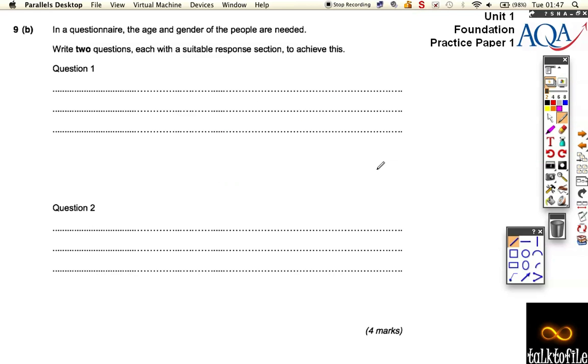If you look at this next one, so this is now focusing on questionnaires and it's asking us to write two questions. In the questionnaire, we want to find something about the age and something about the gender of the people. Now, you can see there's four marks. There's two marks available for each. One, you've got to write a question and a suitable response section. So what do we mean by that? Well, the question here is, what is your gender? Simple question, or you could ask, are you male or female? Okay, so that's the question. That would give me one mark in the example.